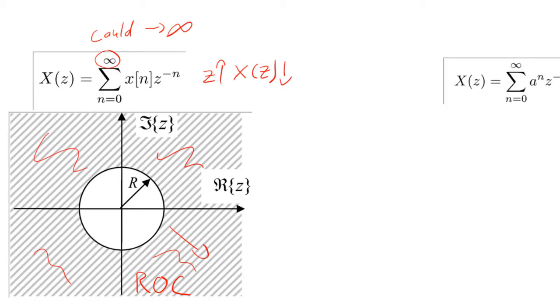For example, let's say we took the Z-transform of this sequence. Then the transform will converge only if the absolute value of Z was greater than 2. This would happen because the denominator would grow faster than the numerator.